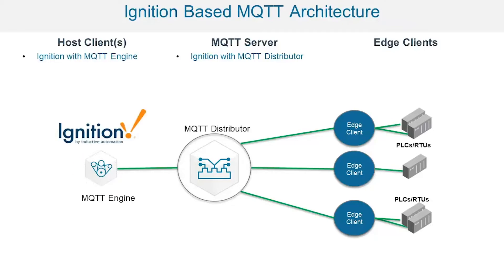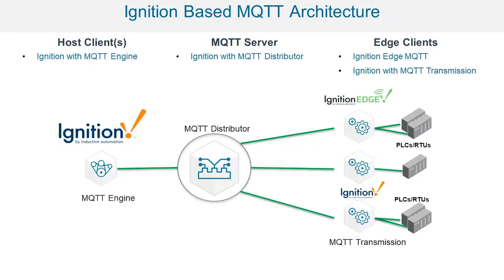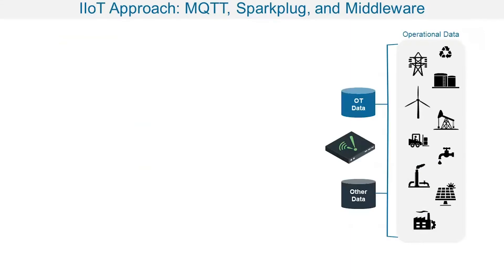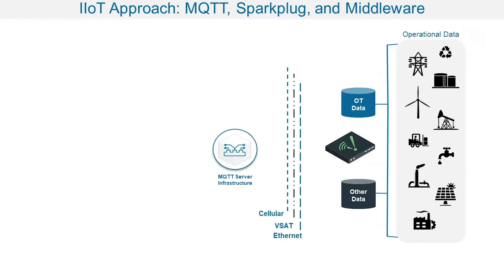On the Ignition Gateway, we install MQTT Engine — an MQTT component that is Sparkplug-aware and can subscribe to messages coming through the MQTT server. On the edge, we have Transmission, which takes OPC UA tags and converts those to Sparkplug messages from the edge of the network. We take our devices in the field, interface to them locally using high-speed polling, and get information — not only what we were polling previously, but other stranded data. We then get an MQTT server infrastructure and establish our IP connections into a DMZ.